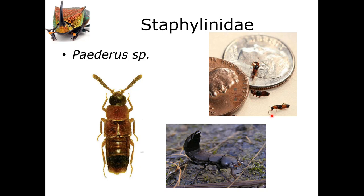There is one species that can cause an issue. We tend to see a wide variety of species running around on bodies. Because they are predaceous, we don't necessarily use them as a time-of-colonization indicator. They have to come after the maggots are there, so that's pretty much all we know about them.